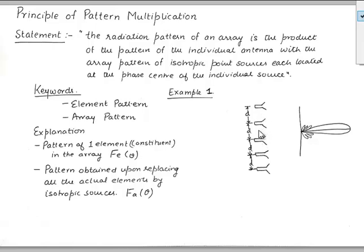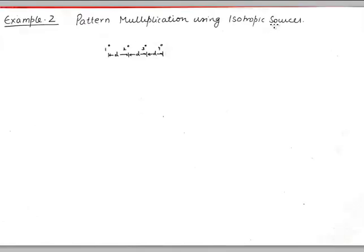This was a classical case of non-isotropic elements in an array. But you can also get a question where you are asked to find the radiation pattern of isotropic sources using pattern multiplication — for example, four isotropic point sources separated by distance d with no phase shift between them.